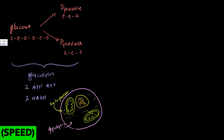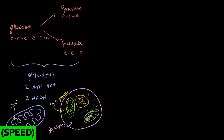The Krebs cycle, or citric acid cycle, actually takes place in the inner space of the mitochondria. If this is a mitochondria, it has an outer membrane and an inner membrane. If we have just one inner membrane, we call it a crista; if we have many, we call them cristae — these little convoluted inner membranes. It has two compartments: the outer compartment, and the inner compartment called the matrix.